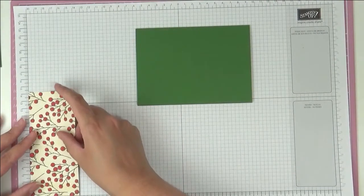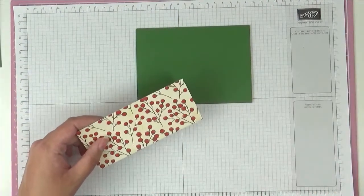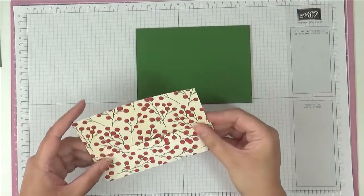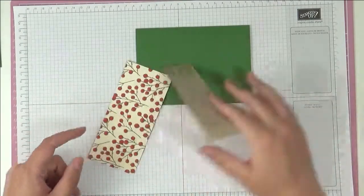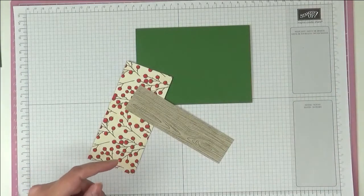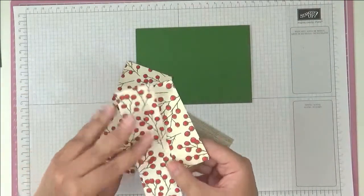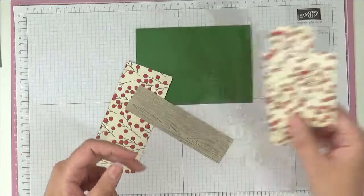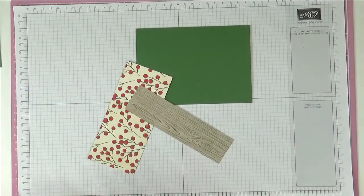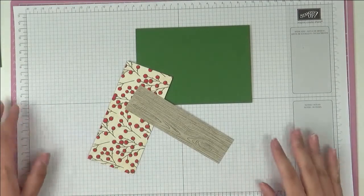All I've got left from my 12x12 sheet are these two little pieces here. To be honest, you can make a card again with these, so you could actually get two cards and a bag all from one piece of 12x12 designer series paper.